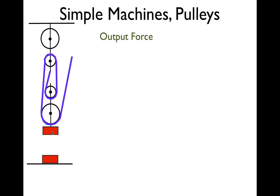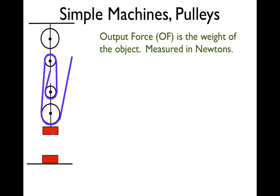So the first thing, and maybe the most straightforward thing, is the output force — it's the weight of the object that we're trying to lift. It's measured in newtons. If you measure your weight in the metric system, you measure it in newtons, and the weight of the object is the output force. That's the force you're trying to get out of the machine — you want to raise that thing up. So if somebody was to say in a problem you're trying to lift an object with a weight of 20 newtons, that's the output force in this case.